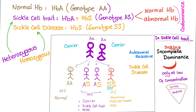Sickle cell disease is autosomal recessive. So 25% of offspring will be normal, 50% will be carriers — we call this hemoglobin AS, or the carrier state, or sickle cell trait — and 25% will be abnormal. This is sickle cell anemia, hemoglobin SS.